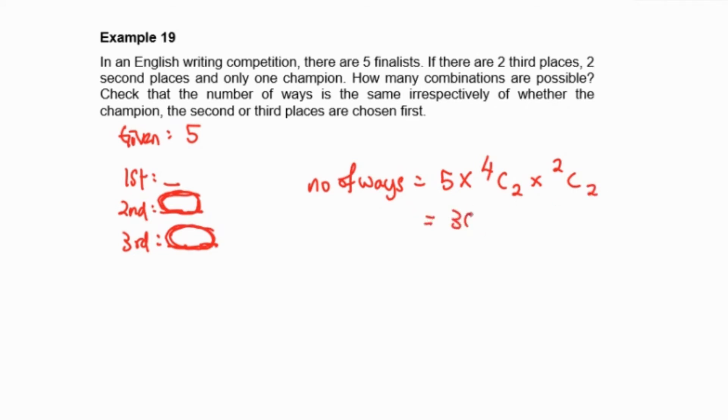So this will give us 30 ways. Then if we start from selecting third place followed by second place and followed by first place, the number of ways will be equal to, for third place it will be five choose two, and then second place you will have three people to choose two, and one person for the champion.